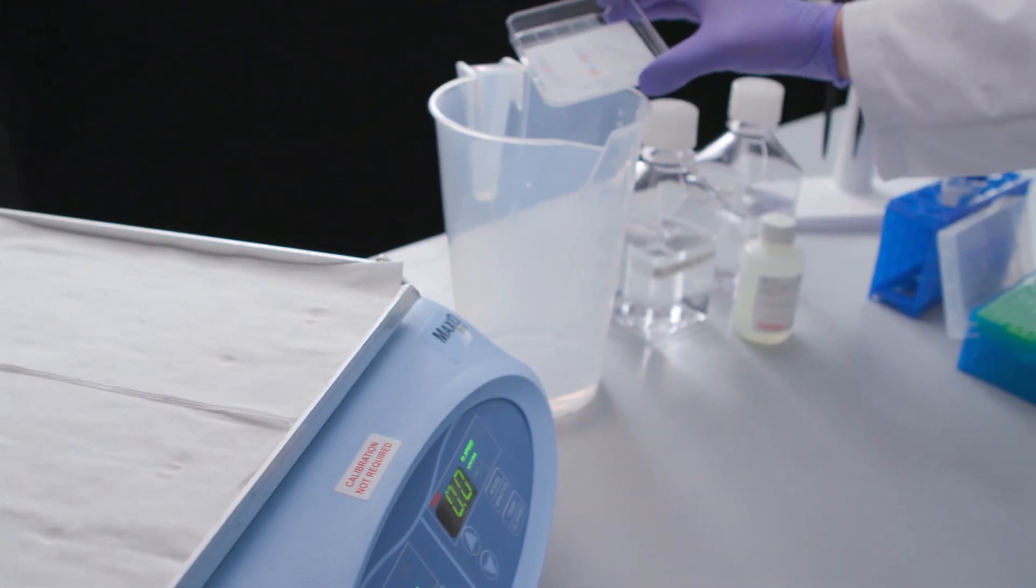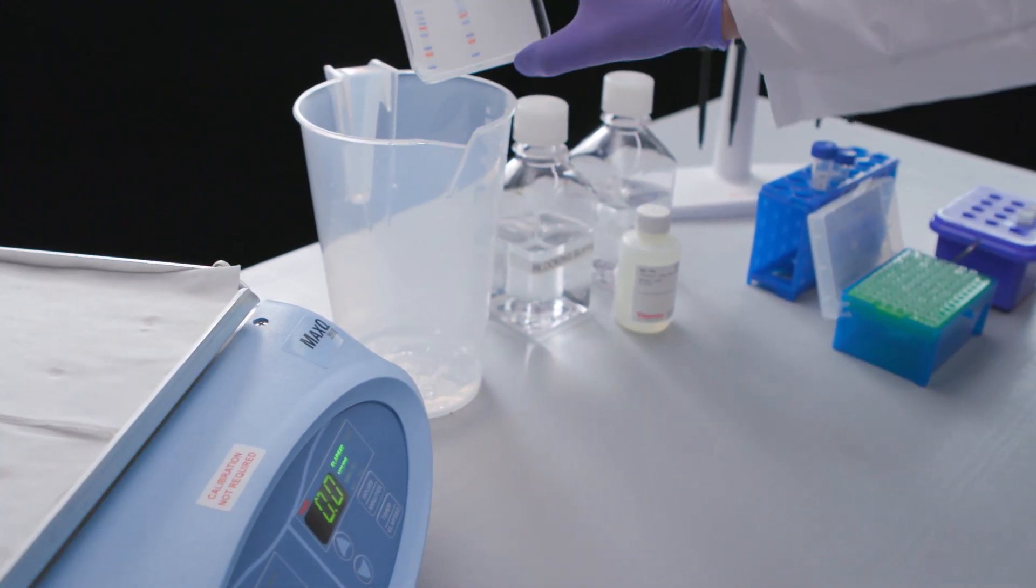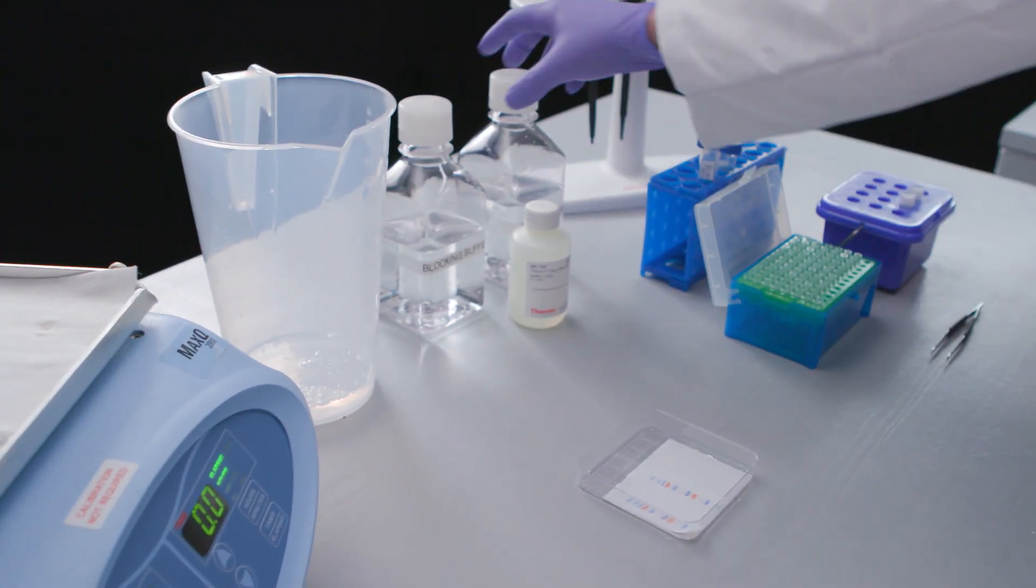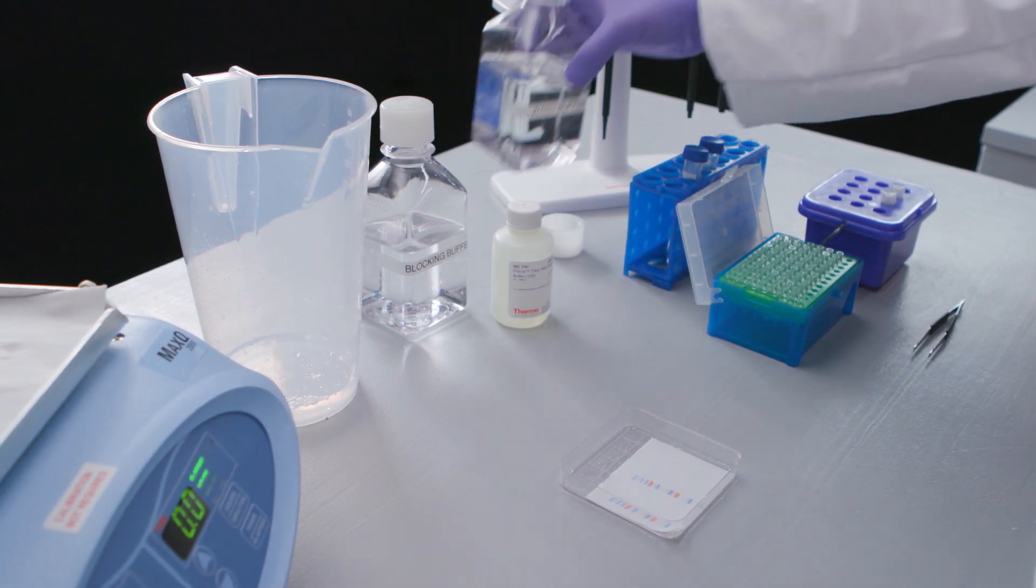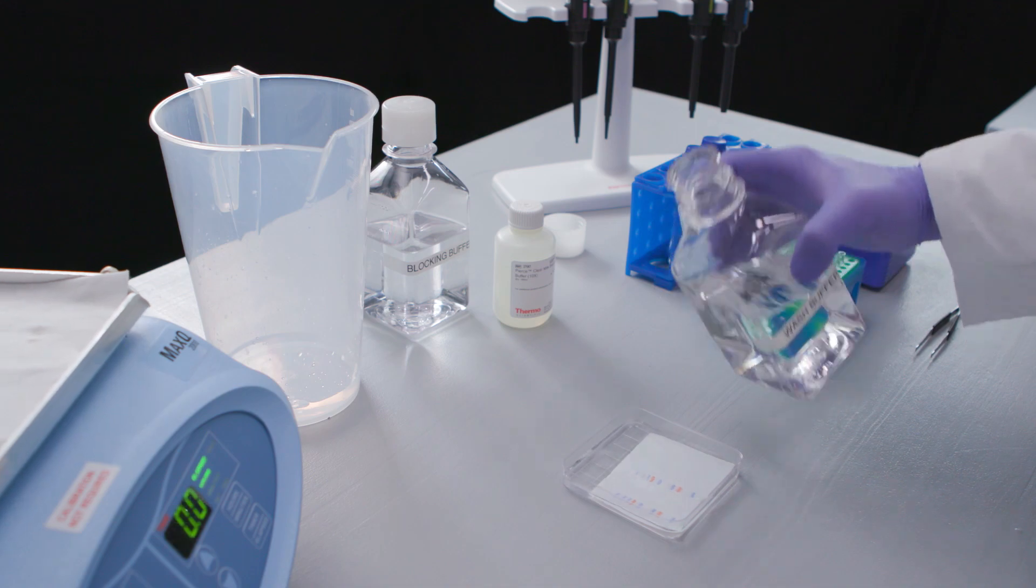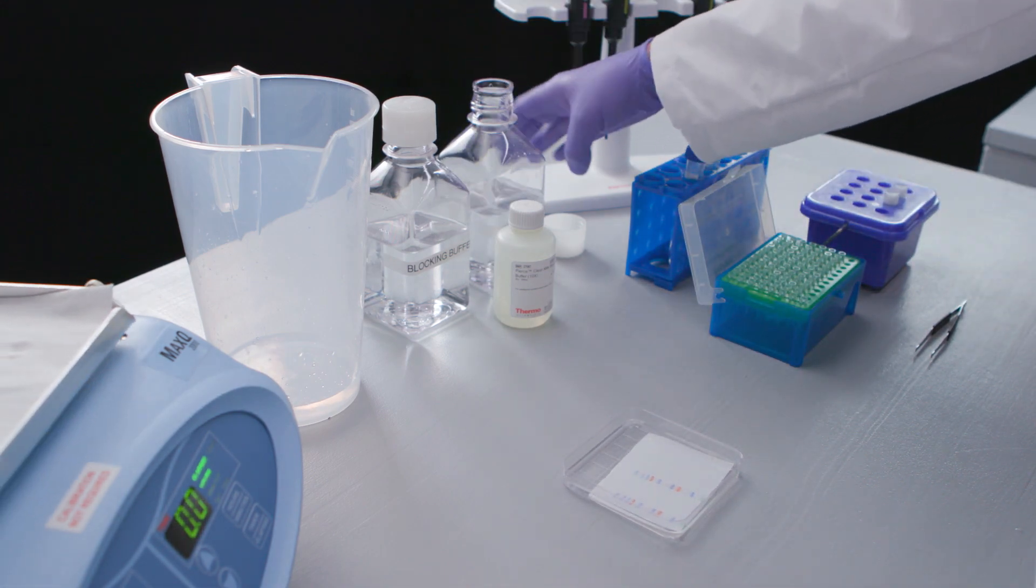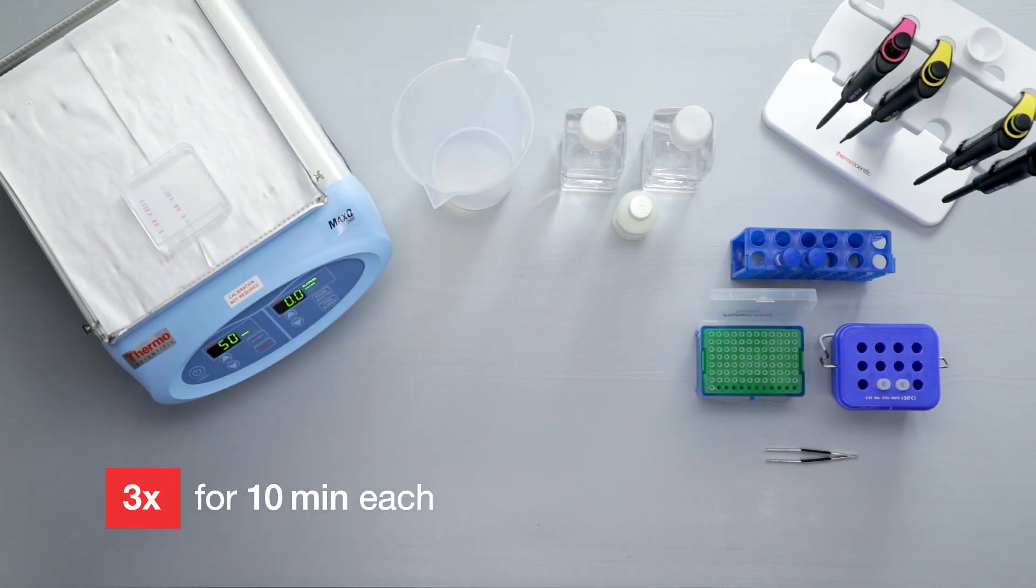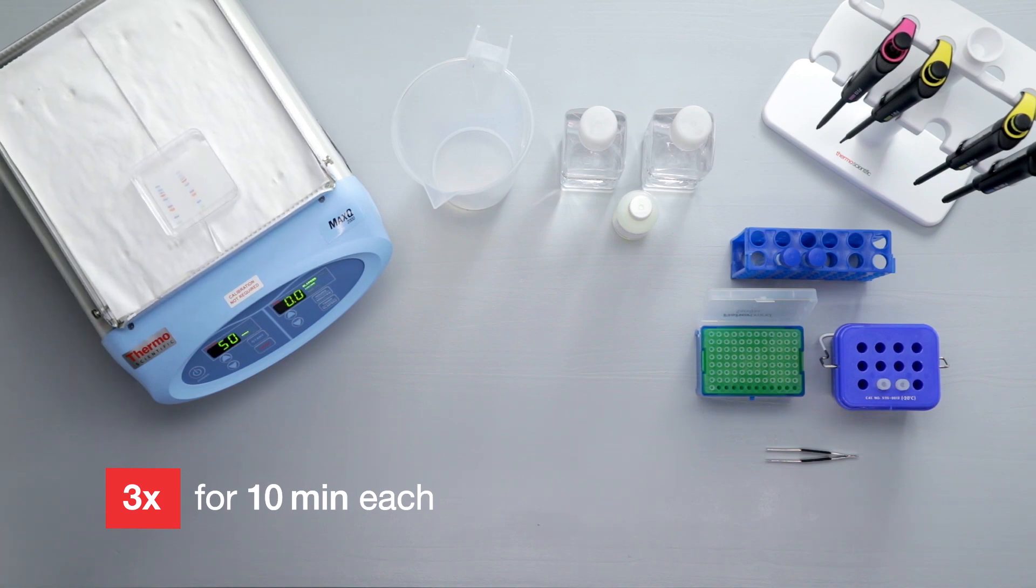Remove any unbound primary antibody by performing a series of washes. The typical wash buffer is TBS or PBS based, with 0.05 to 0.1 percent detergent. Wash the membrane 3 times for 10 minutes each in wash buffer with gentle agitation.